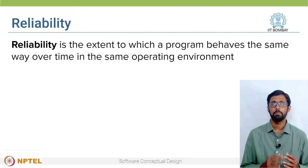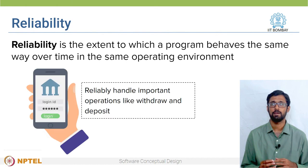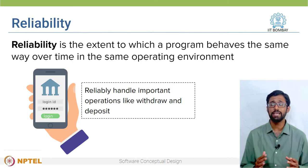Next, I want the service to be reliable. For example, if I miss more than three meals a week, I wouldn't be happy. Exactly, this is termed as reliability. Reliability is the extent to which a program behaves the same way over time in the same operating environment. In case of software, we need to ensure that it doesn't crash often — otherwise users will get frustrated. For example, in a mobile wallet like Amazon Pay, reliability is even more important. We must ensure that the wallet reliably handles all operations, especially important operations like withdrawal and deposit.